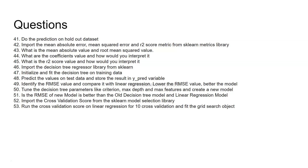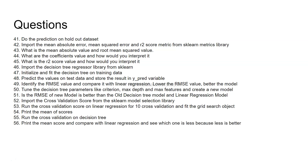By using cross-validation, we are training the model on the entire dataset across iterations, which gives us a better idea about the scores. There will be fluctuations — in some cases the score will be high, in others low — so we print the mean of the scores and take an average to find the best overall score. You can run cross-validation on the decision tree just as you did on linear regression, then compare the mean scores to see which model performs better.